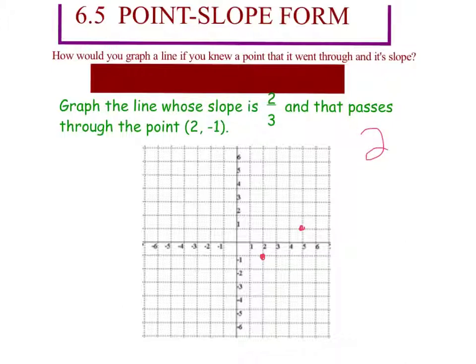Now if you ever run out of room while graphing, realize that two over three is the same as negative two over negative three. So instead of going up two, right three, we can go down two—one, two—left three—one, two, three—and put a dot right there, and you'll notice it is still on the line. So there's our line.